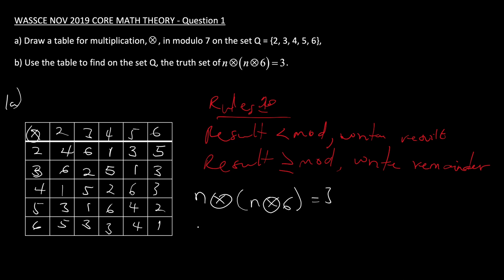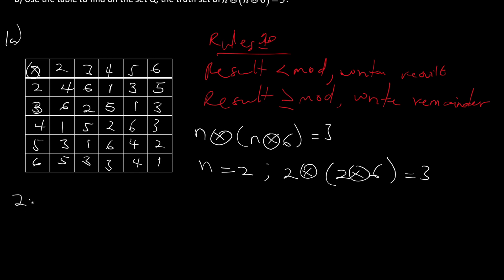Let's pick values of n one by one. If n equals two, we are saying two times (two times six) should equal three. From the table, two times six equals five, so we have two times five. Two times five equals three — this is equal to three, so n equals two satisfies the expression.